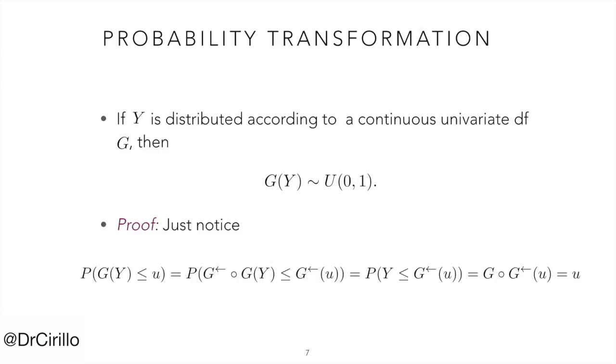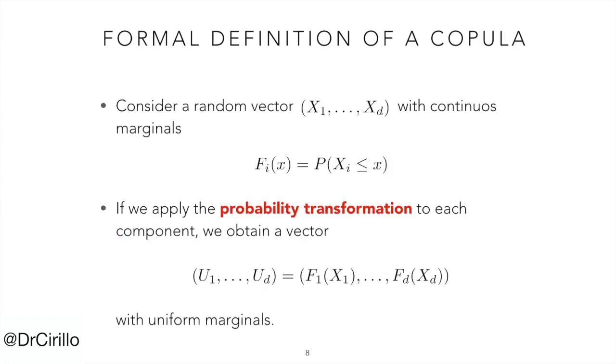I do not want you to learn the proof by heart. Just remember the possibility of moving from a given distribution function to the uniform one. Consider a random vector X1 to Xd with continuous marginals F1 to Fd. If we apply the probability transformation to each component, we obtain a new vector with uniform marginals.